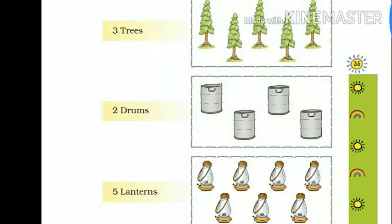Here we have some trees and you have to make a group of 3. So let's count till 3: 1, 2, 3. This group is ready and the remaining 2 trees are left. So we can't make a group of 3 with these 2 trees.